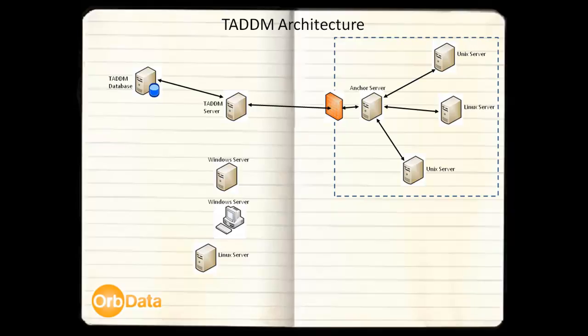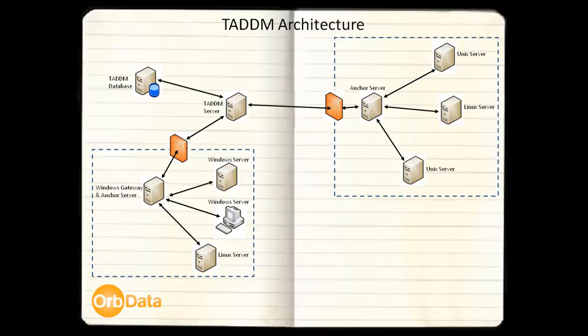The TADM server functions by default as an anchor server for discoveries of servers not separated by a firewall. If any of the target servers to be discovered are Windows servers, TADM requires a Windows gateway to be defined. As discovery of Windows-based targets is performed using WMI, the TADM server uses the Windows gateway server to launch the WMI-based discoveries. If the servers are separated from the TADM server by a firewall, an anchor server is also required. A single Windows server can be used to host both the Windows gateway and anchor server functionality, assuming SSH is installed on the Windows server for communicating with the TADM server.